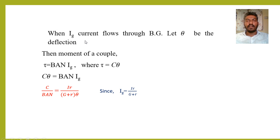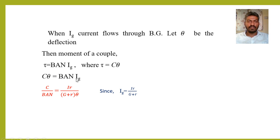When current IG flows through the ballistic galvanometer, let theta be the deflection observed. The moment of a couple is written as tau = BAN·IG, and also tau = C·theta, where C is the couple per unit twist. Equating: C·theta = BAN·IG. Substituting IG = IR/(G + r), we get C/BAN = IR / [(G + r)·theta].